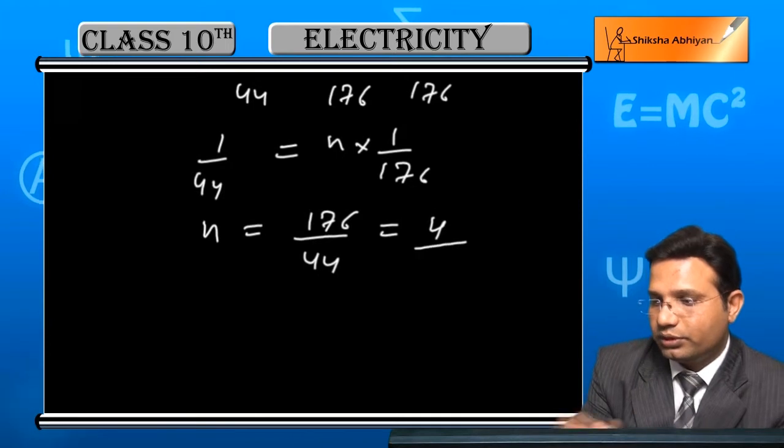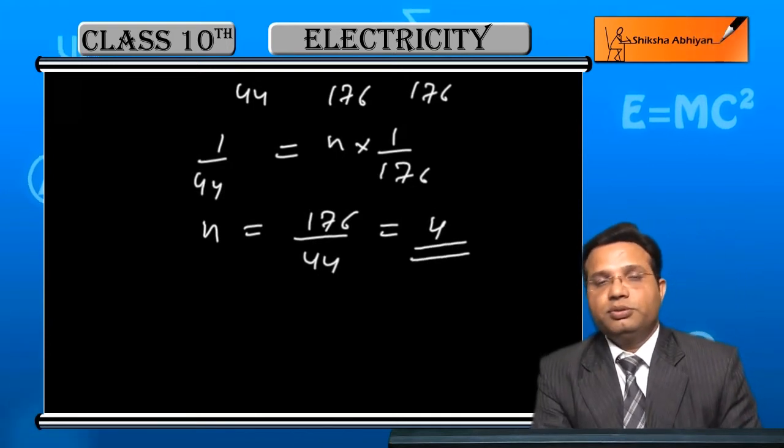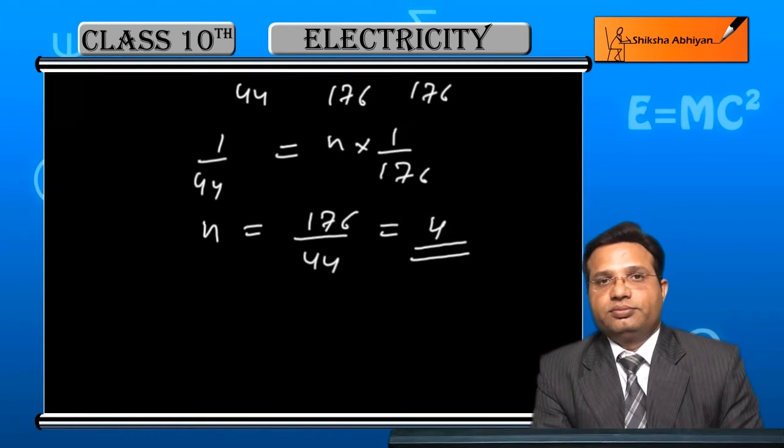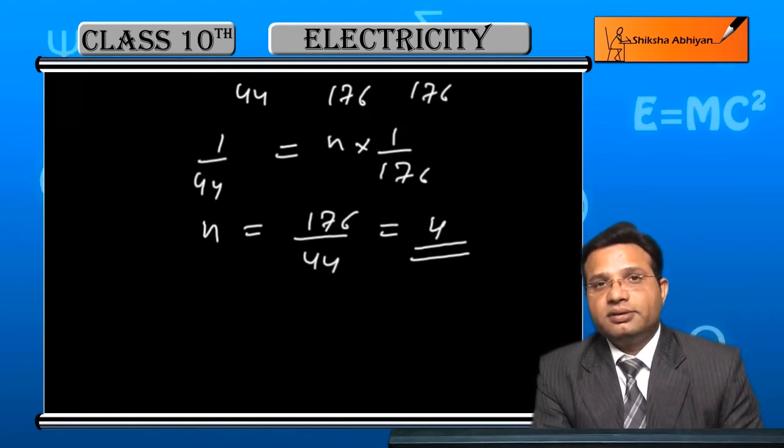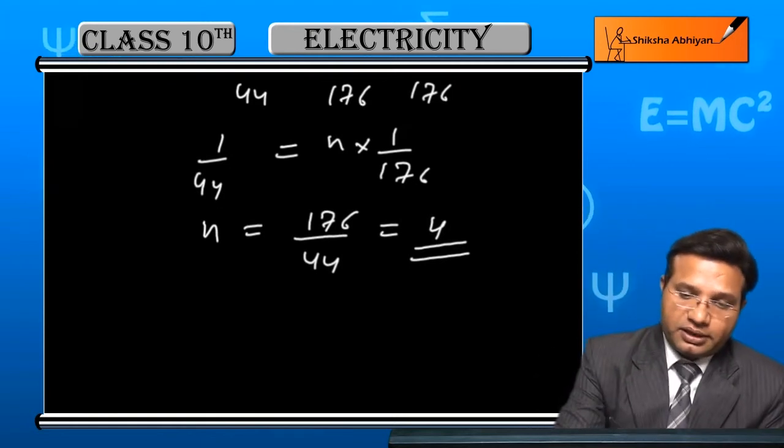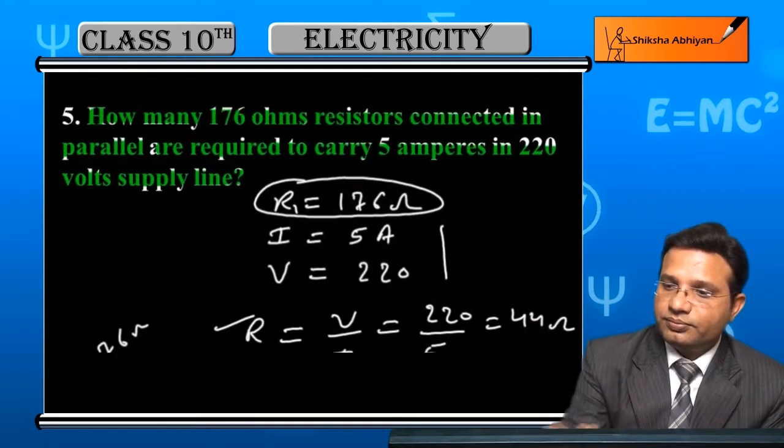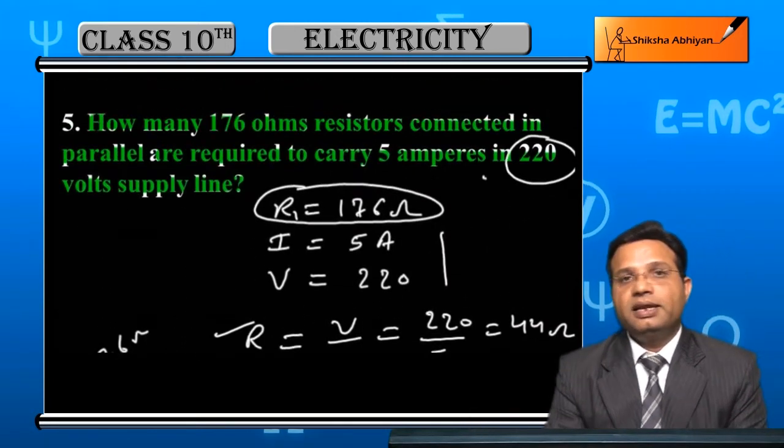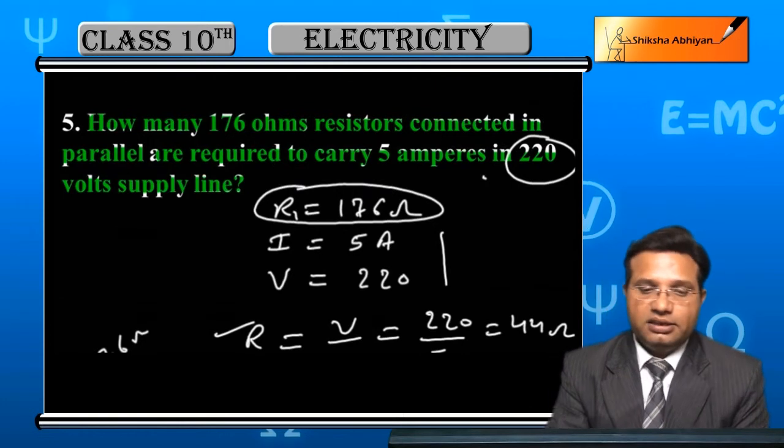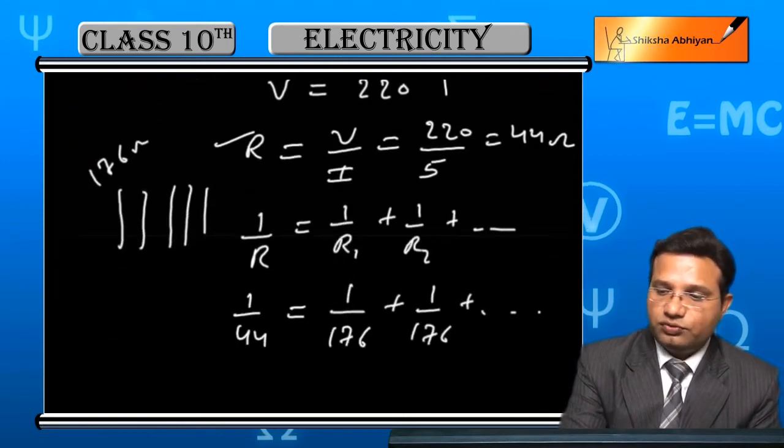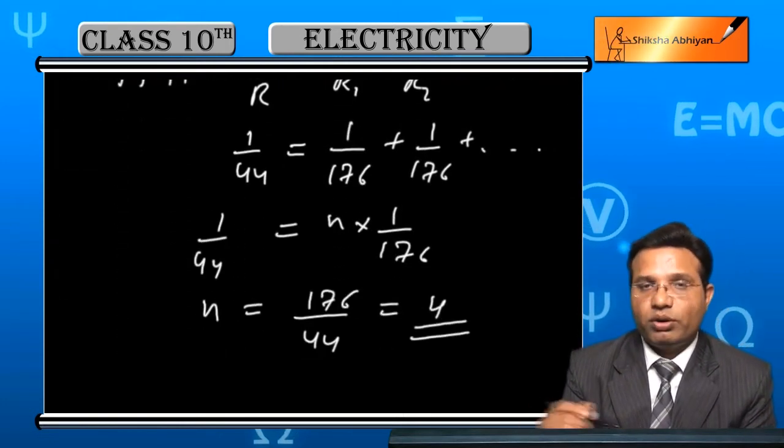Yeah, exactly yeah, 4. So, number of resistors will be used 4 to get 5 ampere current through a 220 volt supply line. So, exactly the number of resistors used will be 4 in quantity. Thank you.